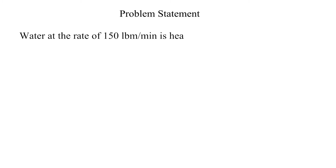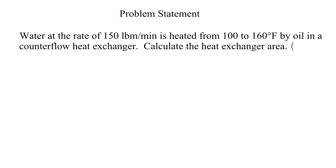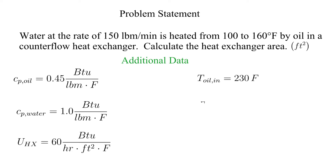Now let's review the problem statement. Water is flowing at a rate of 150 pounds mass per minute through a counterflow heat exchanger. It is heated from 100 degrees to 160 degrees Fahrenheit. The hot fluid is oil. The temperatures for the oil, the specific heats, and the heat exchanger overall heat transfer coefficient are provided here. Our goal is to calculate the heat transfer area of the heat exchanger in feet squared.